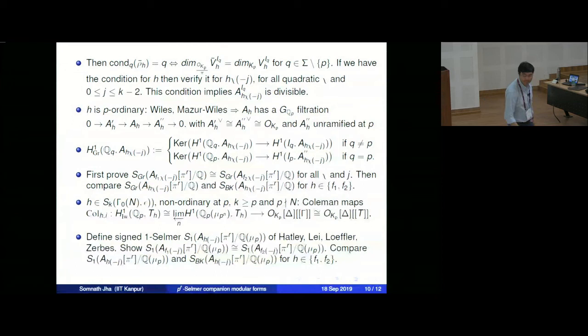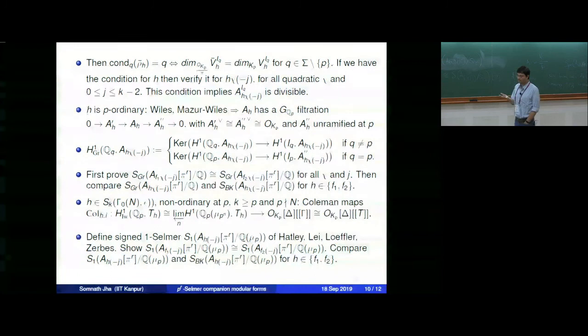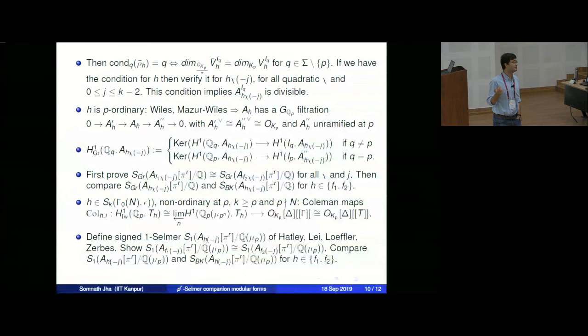One question that was asked: in the theorem the weights are fixed, because the critical values for two different weights would differ. But if you have, say, a weight-2 and weight-3 form, allowing Selmer companion in the sense of the common set of critical values, we have a similar theorem. So we can prove they are also Selmer companions in this extended sense, and we can also give examples.